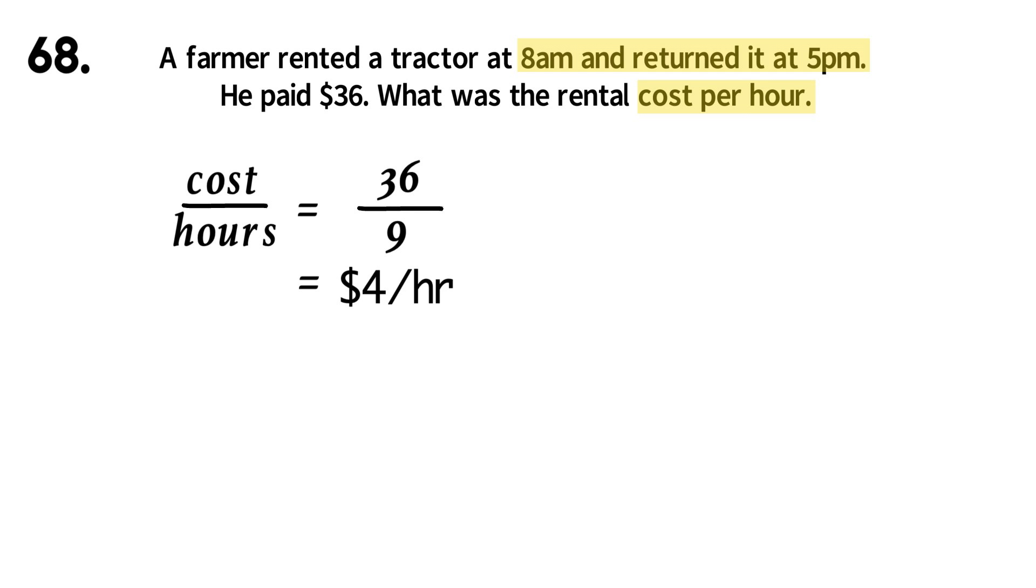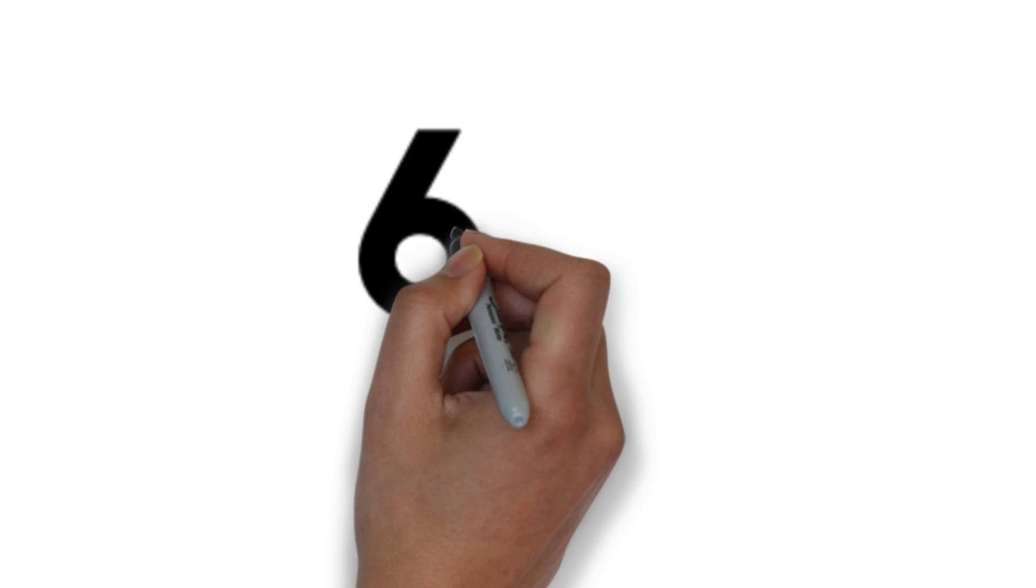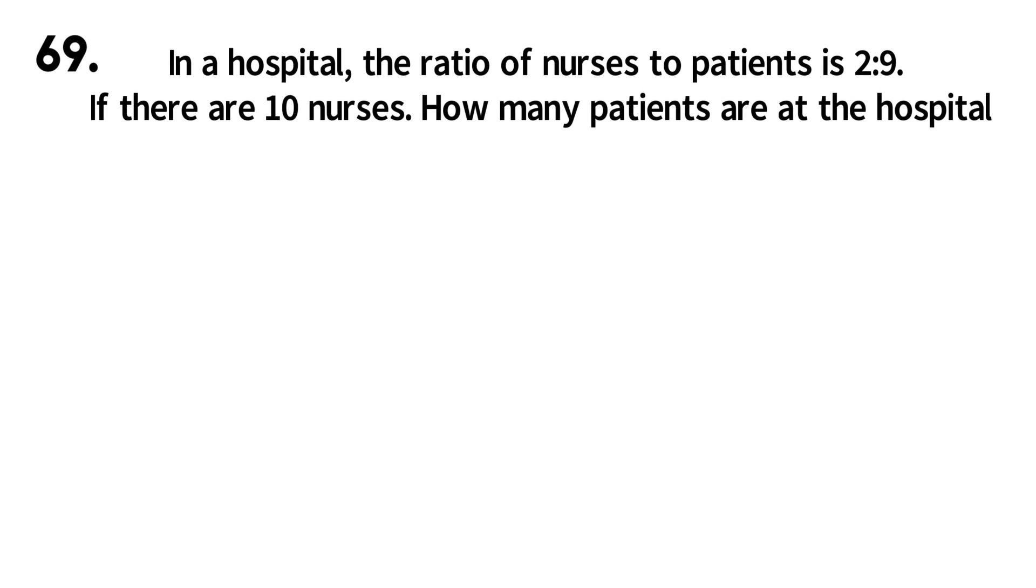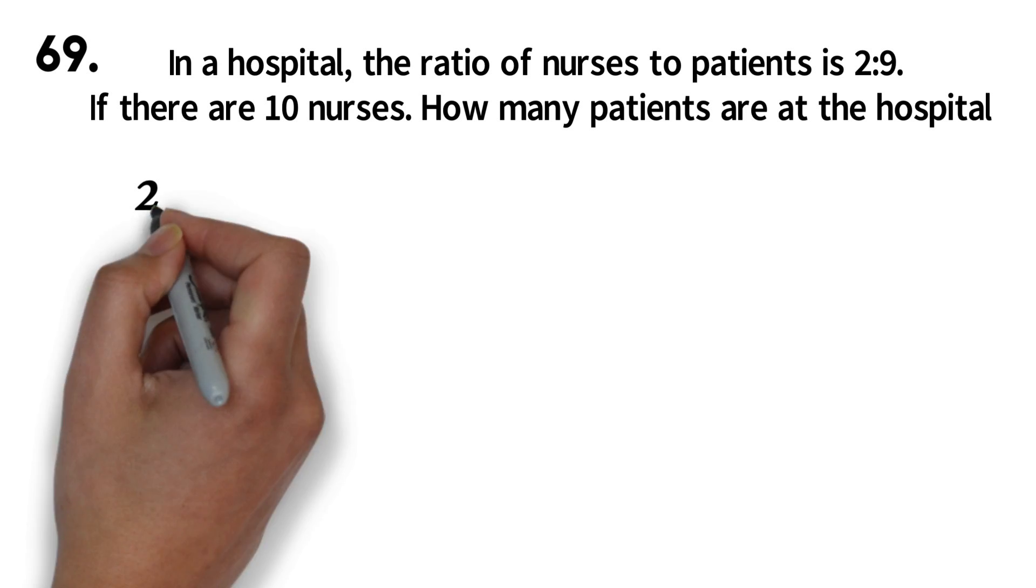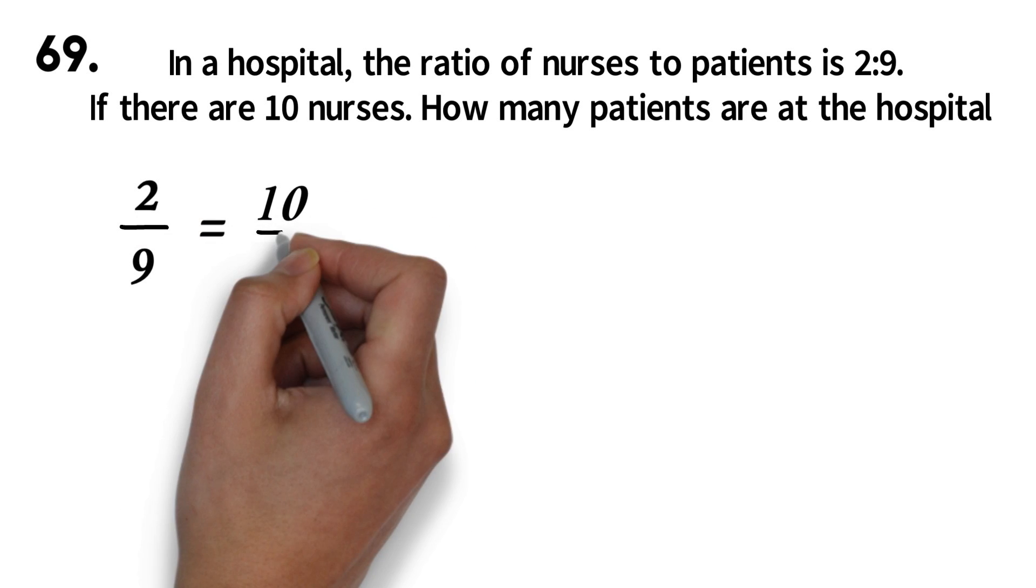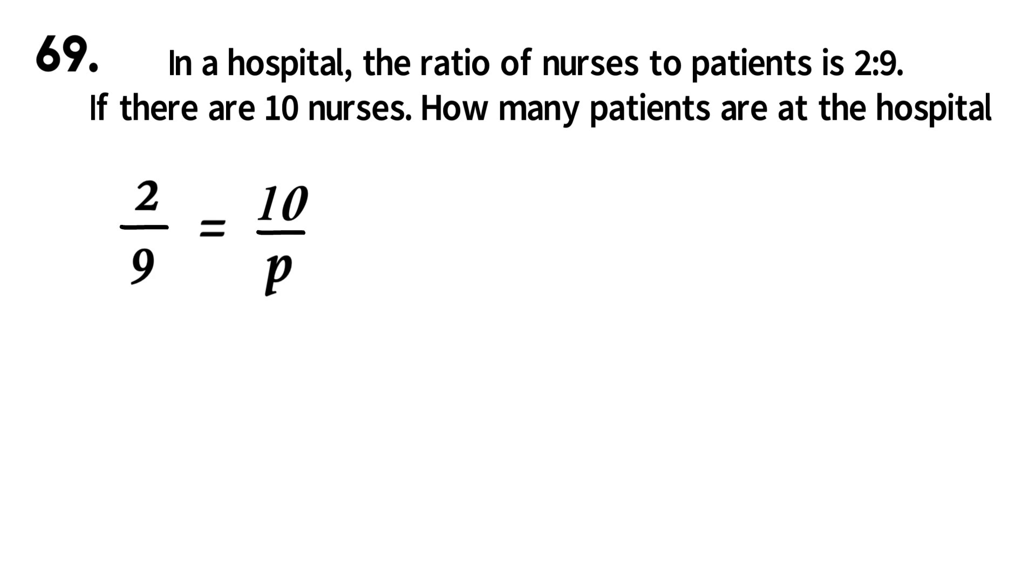Let's look at our next question. Question 69. In a hospital, the ratio of nurses to patients is 2 to 9. If there are 10 nurses, how many patients are at the hospital? You can write the ratio 2 to 9 as 2 over 9. We will equate this to 10 over p, where p represents patients. We wrote the 10 on the top because the ratio of nurses is on the top. We wrote p at the bottom because the ratio of patients is at the bottom.